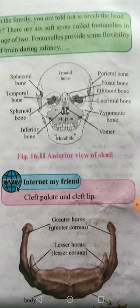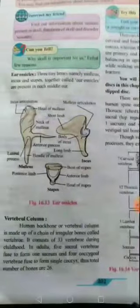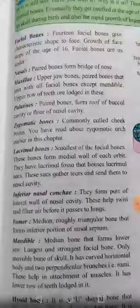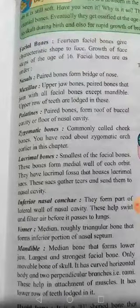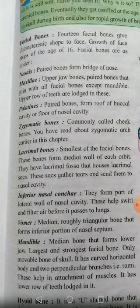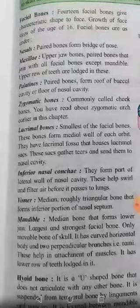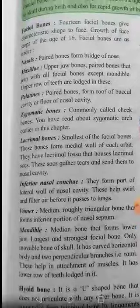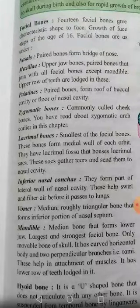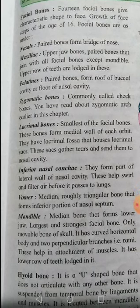Revision: 14 facial bones give the characteristic shape to the face, and facial growth stops at age 16. The first facial bone is the nasal bone — a pair of bones that form the bridge of the nose.